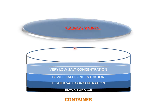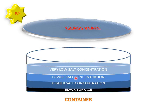We have a glass plate which will cover the whole container and create the solar pond. This is the sun. When the sun gives rays to the glass plate, the glass plate transfers heat to the water, and this heat is collected in the water.